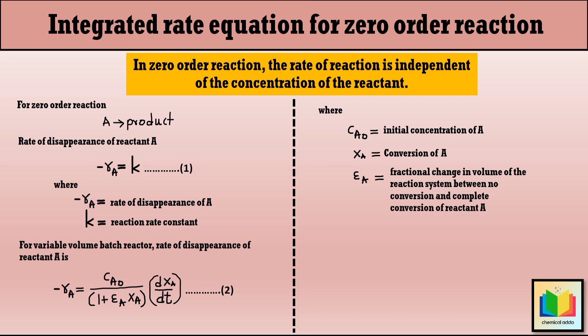After comparing equations 1 and 2, we get: C_A0 divided by (1 plus epsilon_A X_A) into dX_A/dt is equal to K (equation 3).